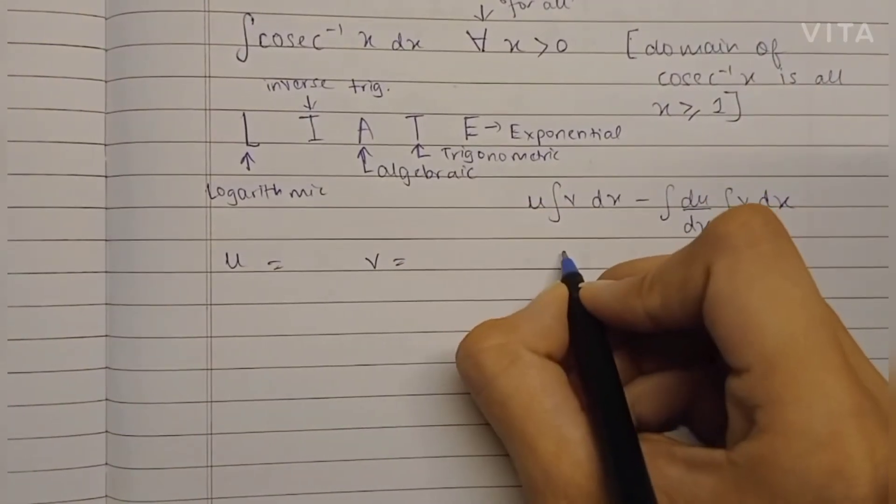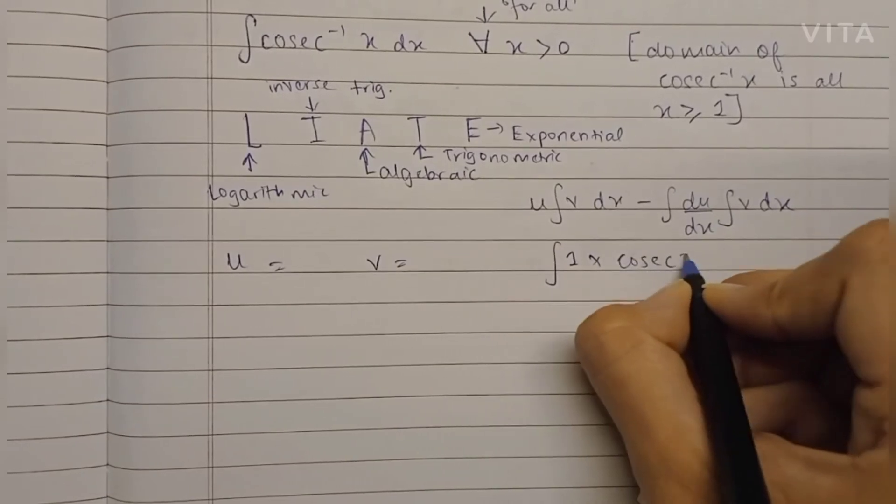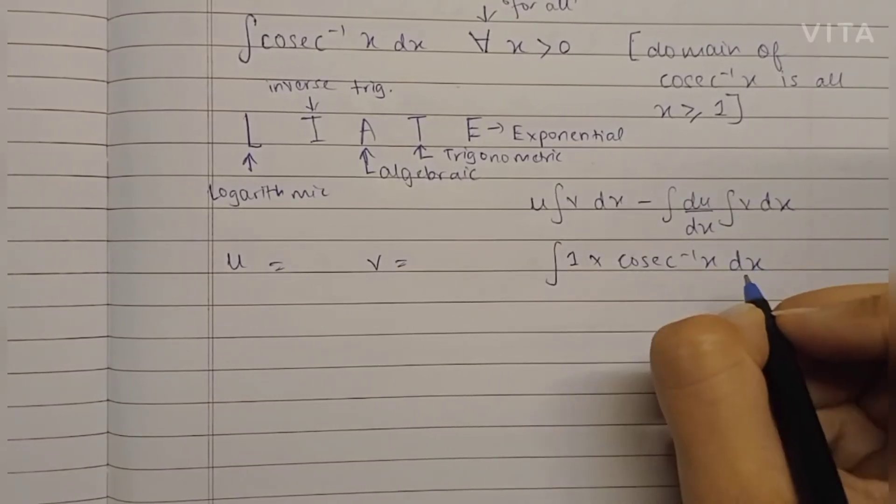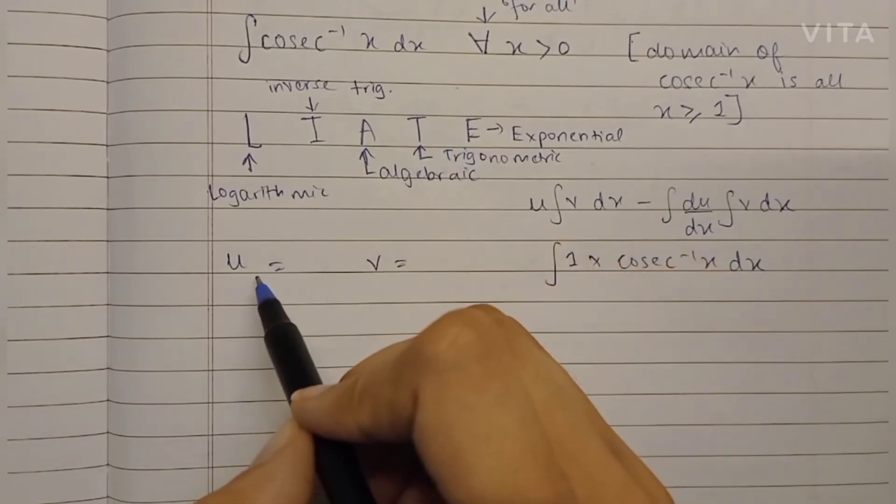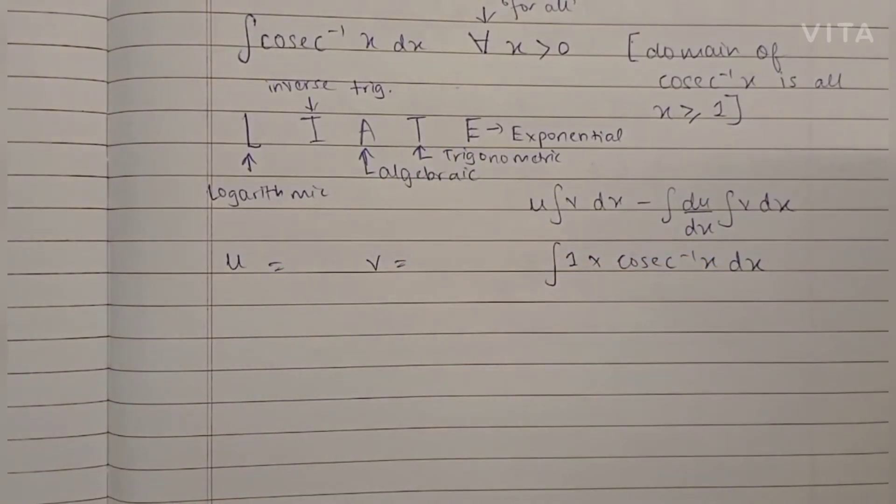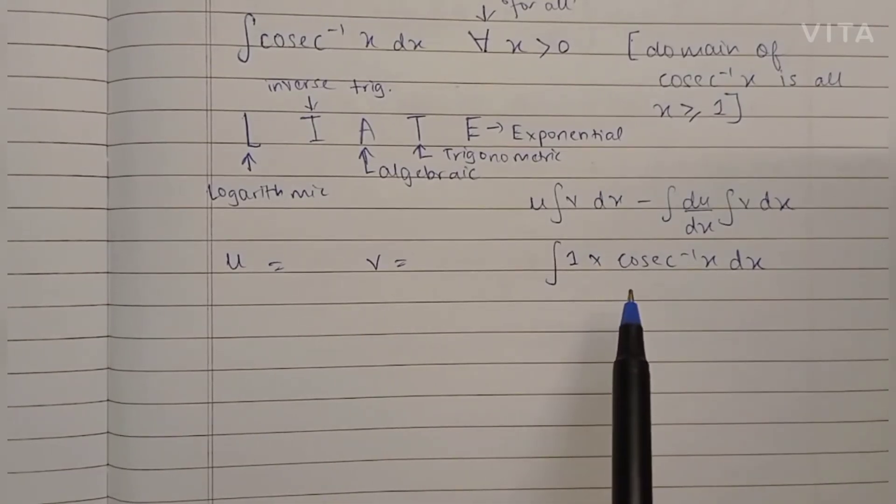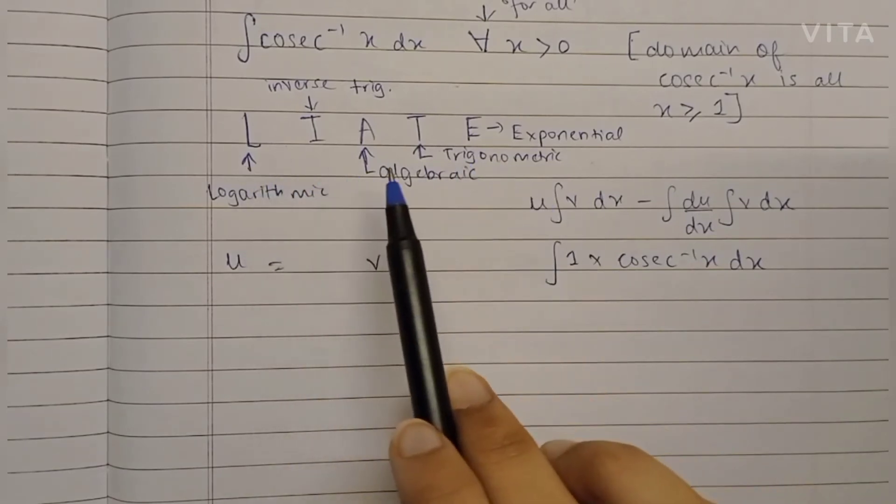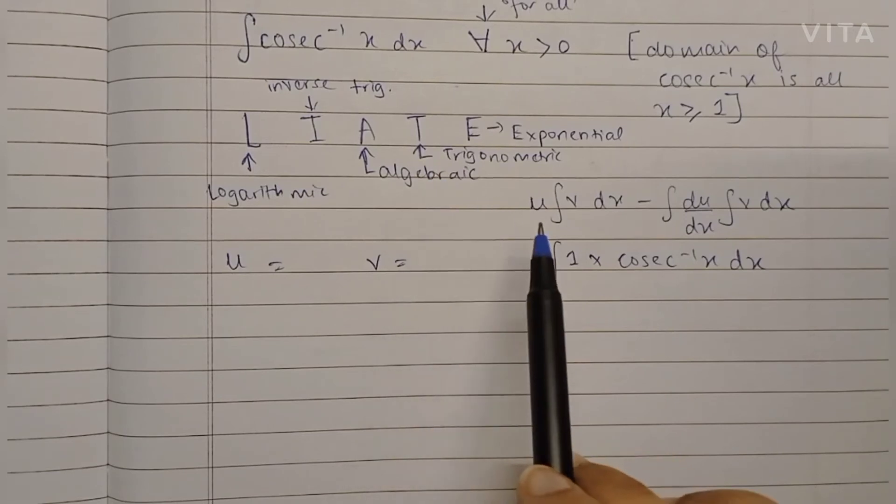So here we have the two terms: one and cosec⁻¹(x). Now, LIATE helps us decide which term we should keep as u and which term we should keep as v, based on which term of the integral is easier to integrate and which term is easier to differentiate. It is the order of preference for the first term, and once we select the first term, the second term will automatically get selected.